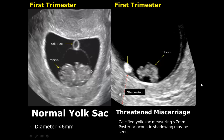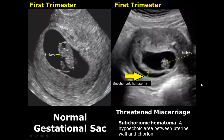A subchorionic hematoma appears as a hypoechoic area between the uterine wall and the chorion. It is due to bleeding and is often crescent-shaped.